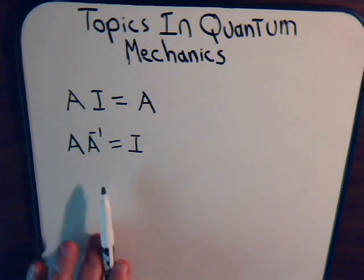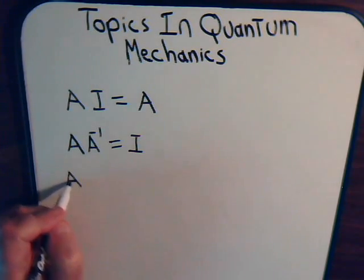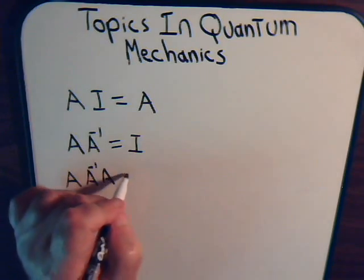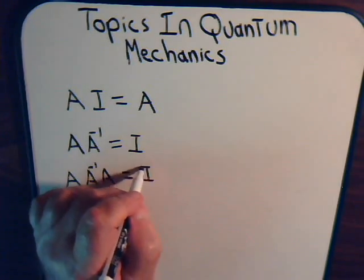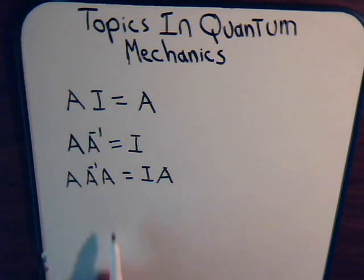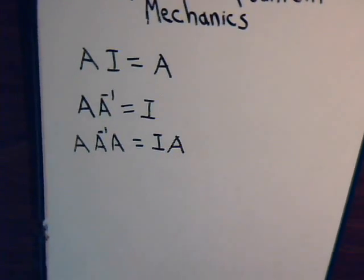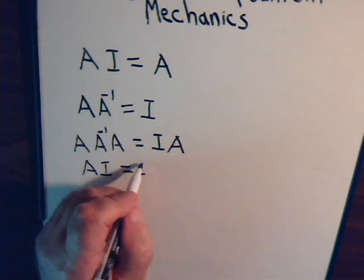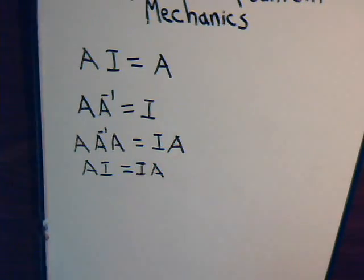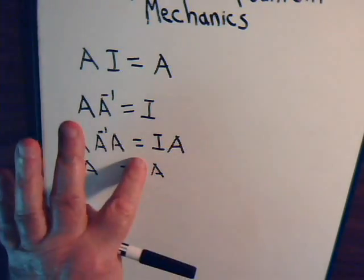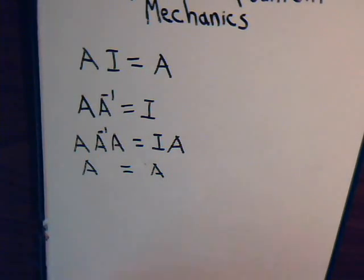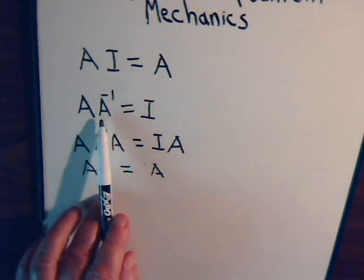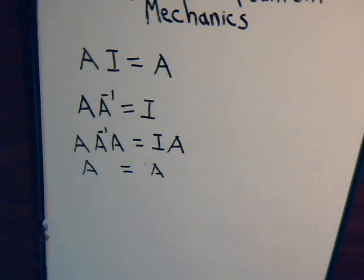We can see that if we multiply both sides of the equation by A, this gives us A times I equals I times A, or A just equals A. So A times the identity matrix equals A, or A times its inverse is equal to the identity matrix.